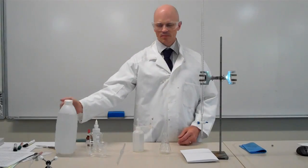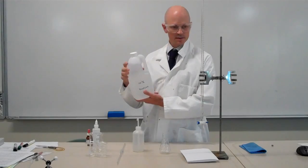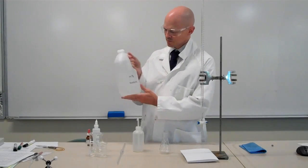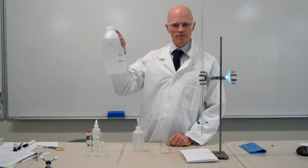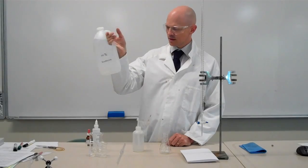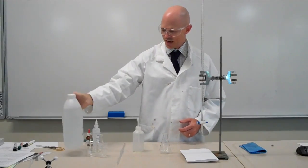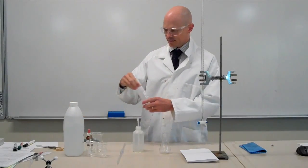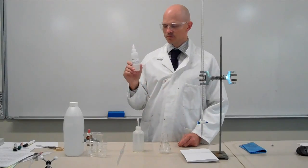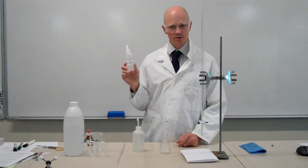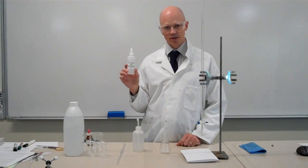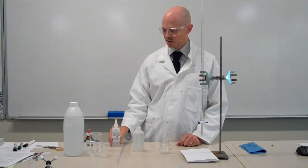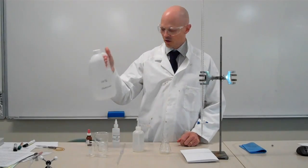So for example, in this particular titration that we're going to do, we have an unknown concentration of vinegar, 10% vinegar. Vinegar is acetic acid and we have a known 0.10 molar concentration of sodium hydroxide. So we're going to use the known concentration of sodium hydroxide to determine the unknown concentration of vinegar.